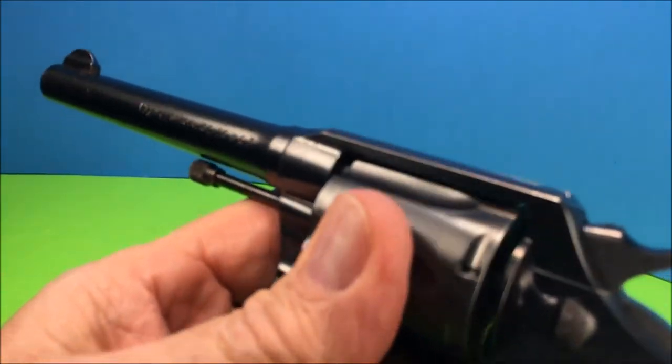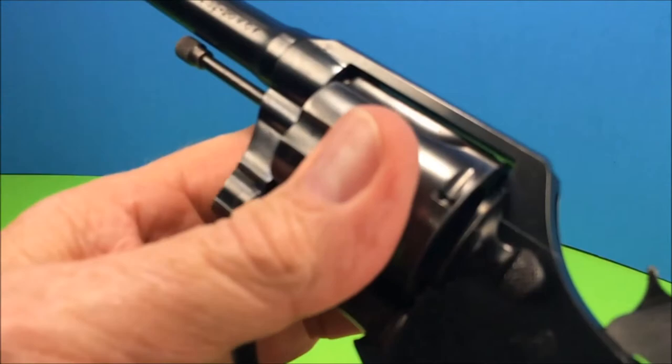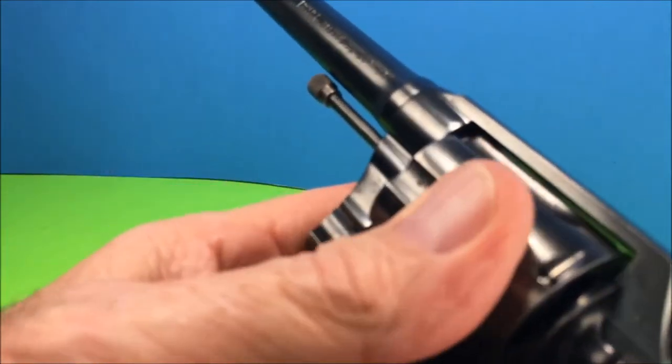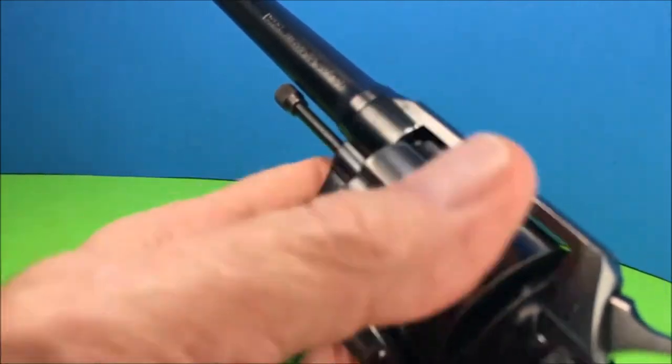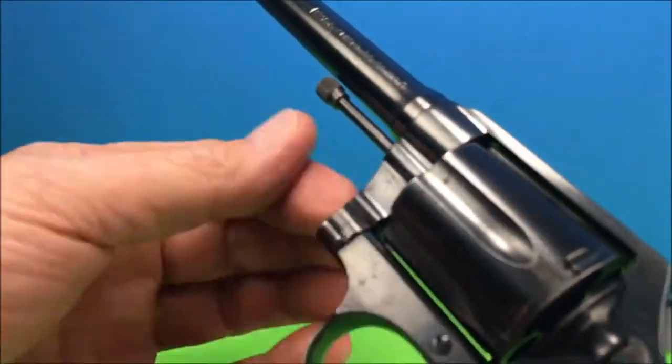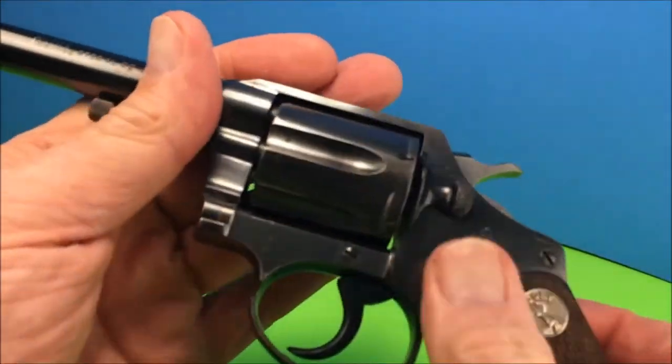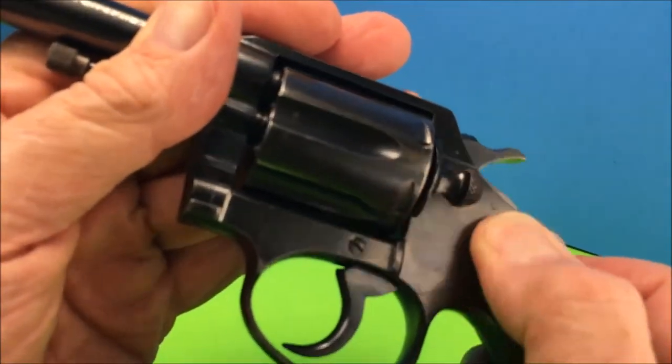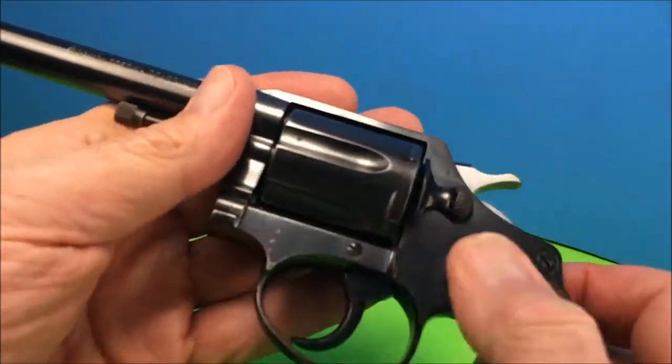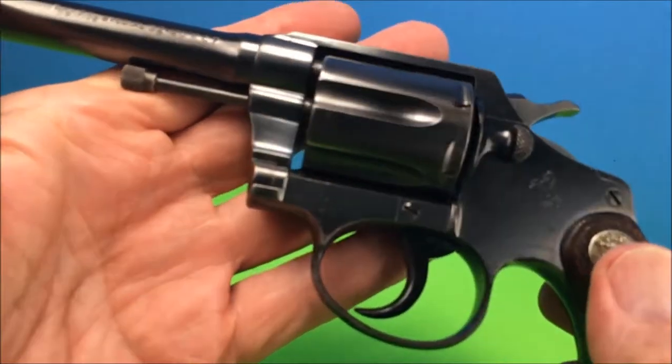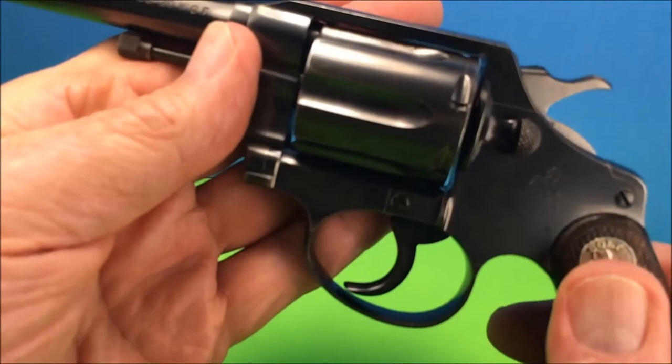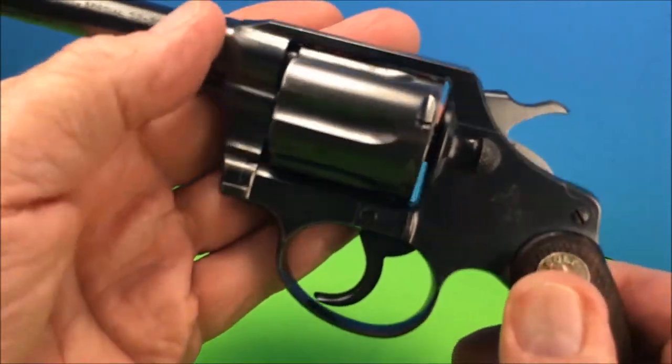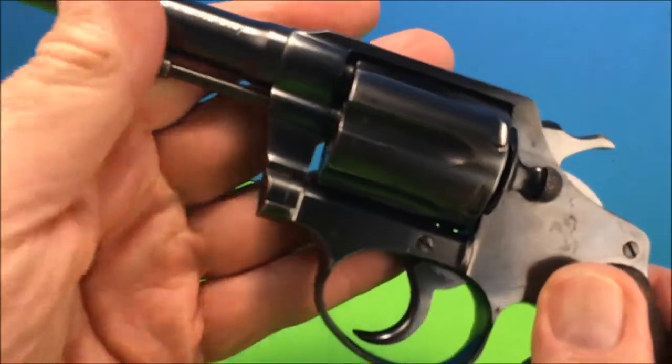Nice. Look at that lockup. Oh my god, this is like a bank vault. Oh, this is a really nice sweet Colt. Police Positive Special 32-20 WCF, Winchester Center Fire.